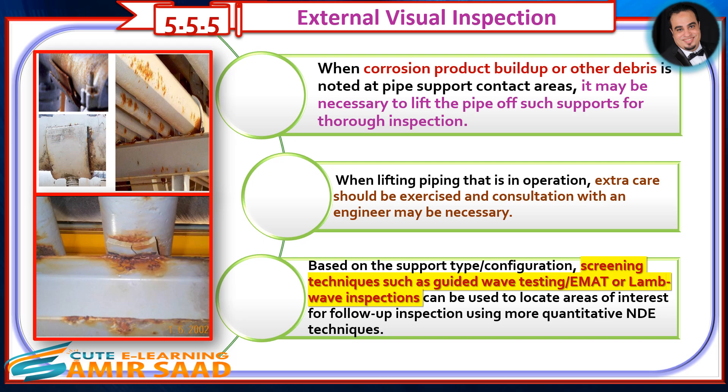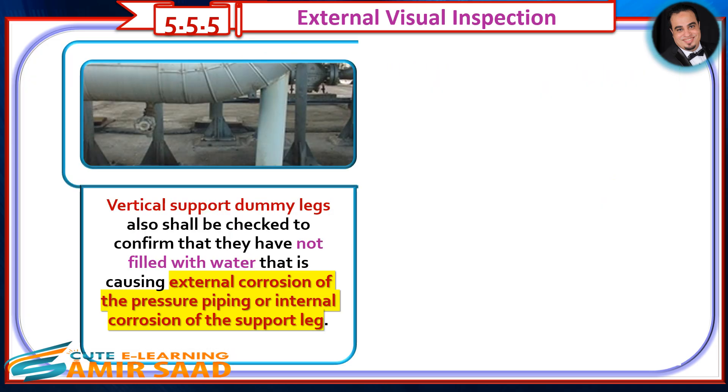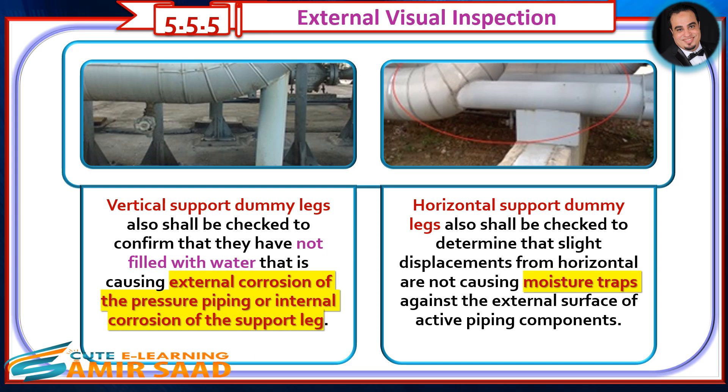Based on the support type and configuration, screening techniques such as guided wave testing, EMAT, or LAM wave inspections can be used to locate areas of interest for follow-up inspection using more quantitative NDE techniques. Vertical support dummy legs shall be checked to confirm they have not filled with water causing external corrosion of pressure piping or internal corrosion of the support leg. Horizontal support dummy legs shall also be checked to determine that slight displacements from horizontal are not causing moisture traps against the external surface of active piping components.